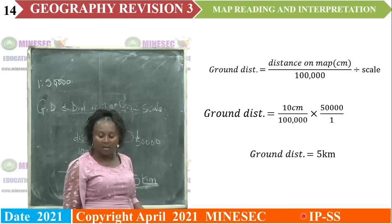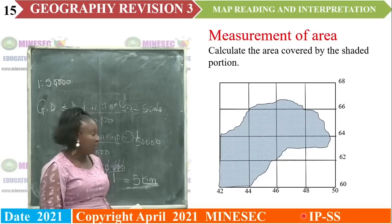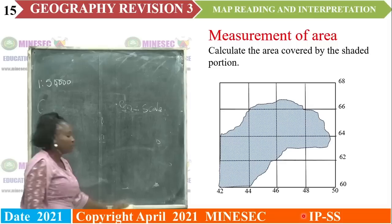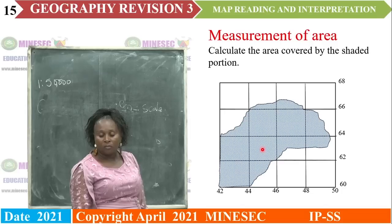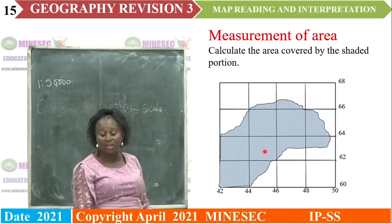The next is the measurement of area. Calculate the area covered by the shaded portion. To calculate the area of the shaded portion, we use just one method — the squared method. The area has been superimposed with grid squares drawn to scale. We use the grid square method to calculate the area.